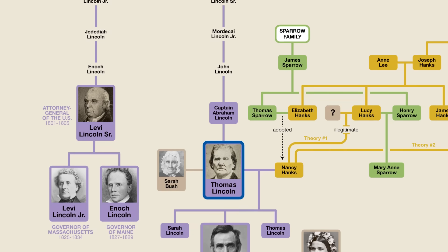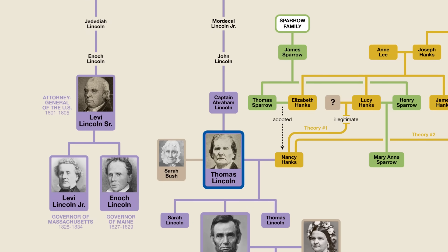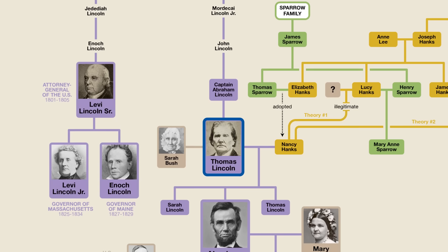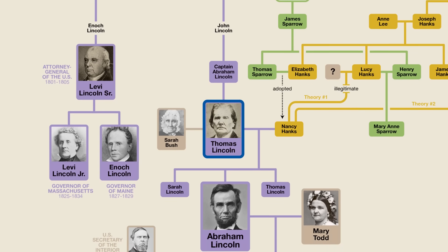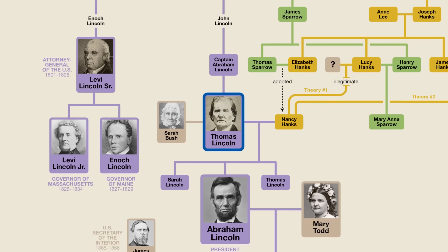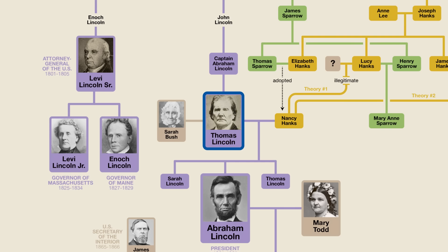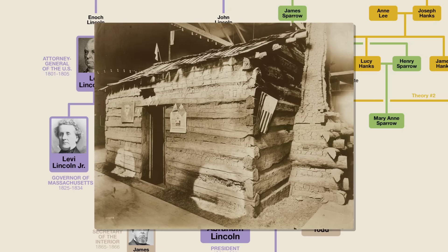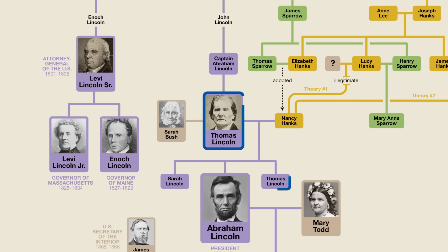President Lincoln's father Thomas was just eight years old when this happened, and being that he was the youngest of three brothers, he ended up inheriting nothing of his father's large estate. Thomas also never learned to read or write and thus had to struggle to make a living. This is why the future President and his sister Sarah ended up being raised in poverty, famously living as children in a one-room log cabin. There was a third sibling as well named Thomas, but he died as an infant. So, that takes care of Abraham Lincoln's father's side of the family.